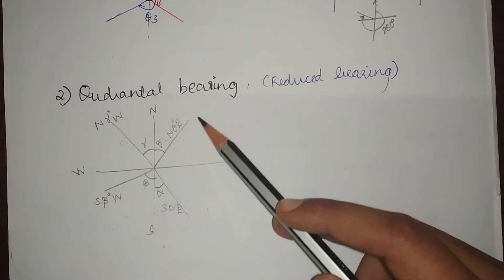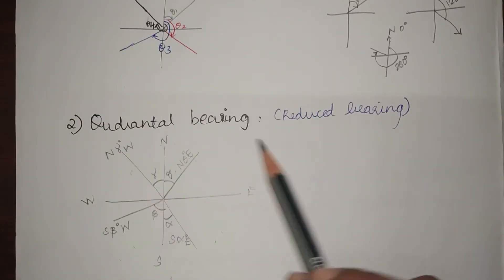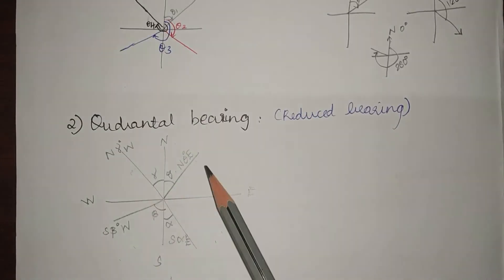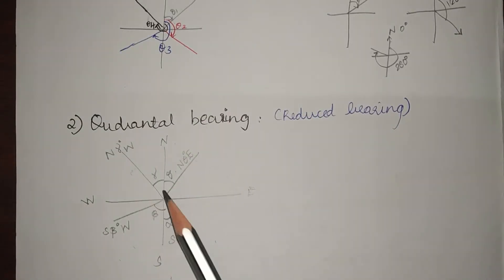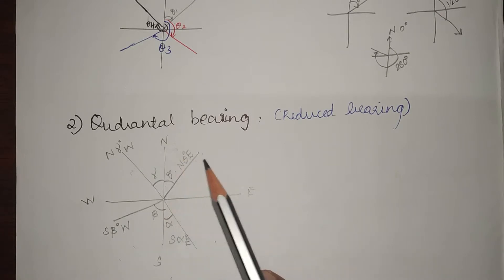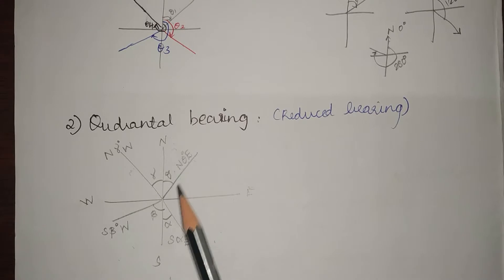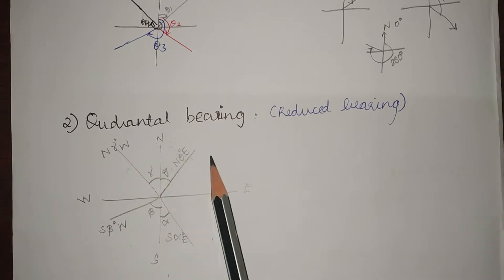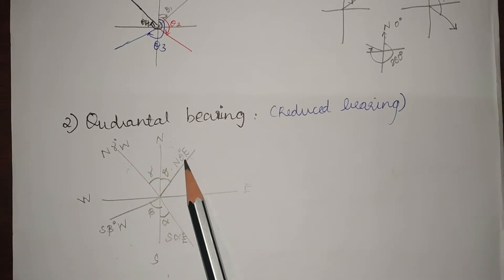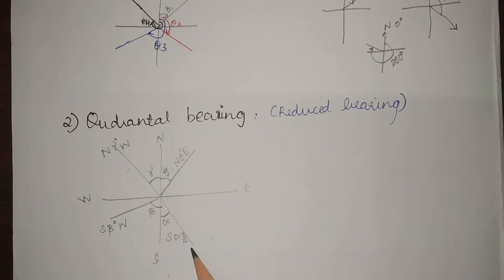For example, if the angle is theta 1, in whole circle bearing we would write just 60 degrees. But in quadrantal bearing, it is going to be North 60 degrees East, which means that it is in the north but inclined at an angle of 60 degrees towards east.